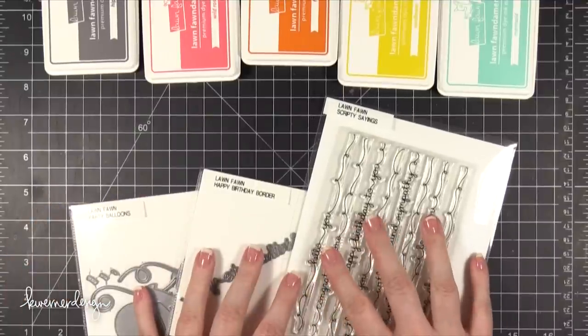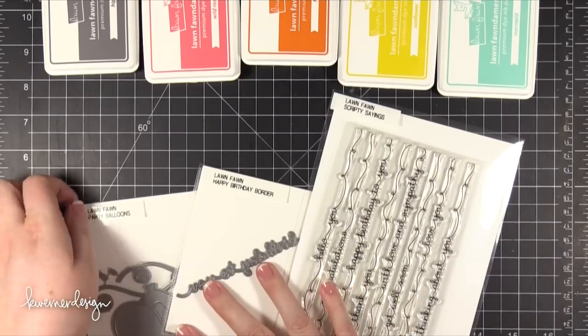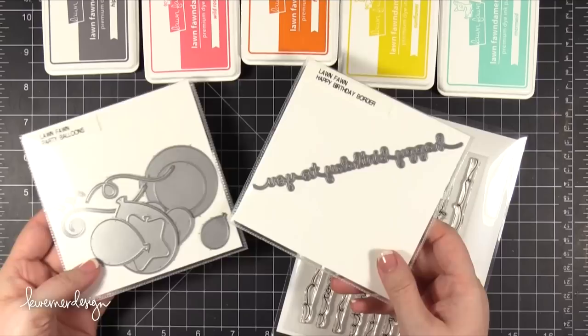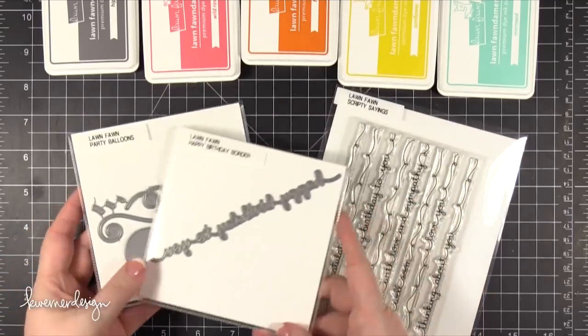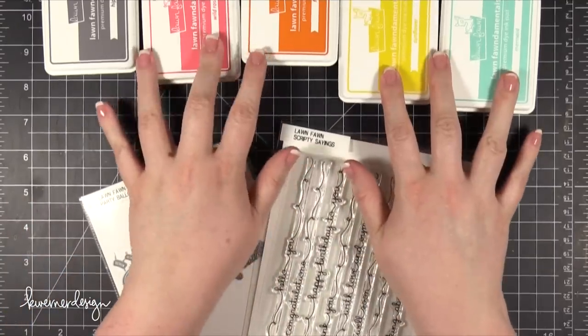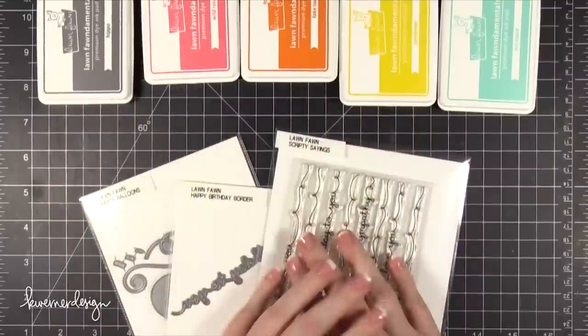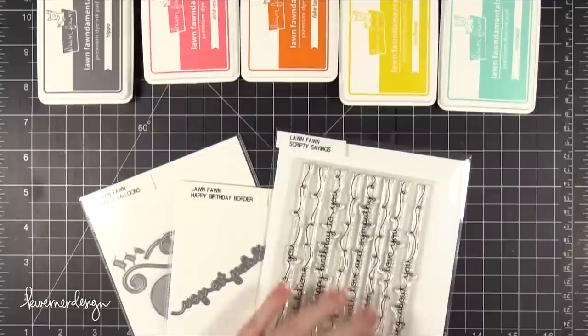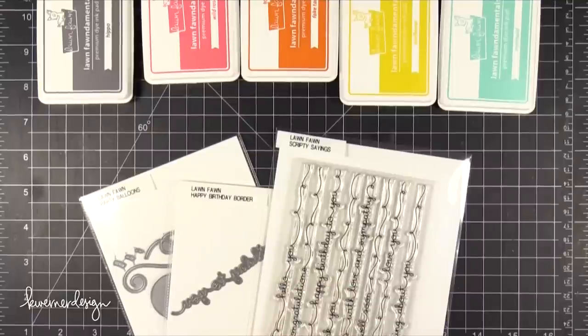Today I'm going to be making a couple cards using new products from Lawn Fawn. I'm using a couple new dies or die sets, a new stamp set, and also their new ink pads. They have ten ink pads in total and I'm just going to be using four of them today. You see five on the top of the screen but I ended up not using that gray ink pad.